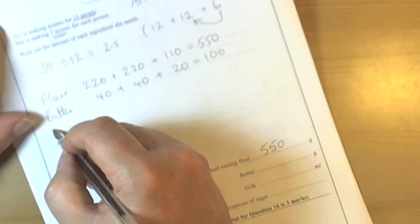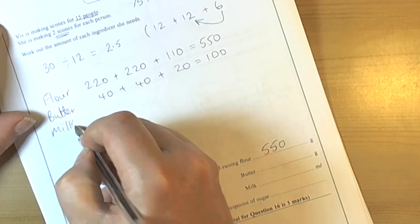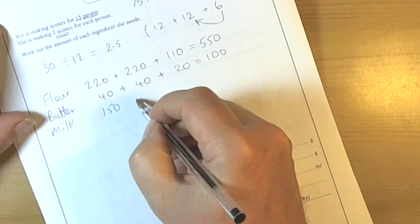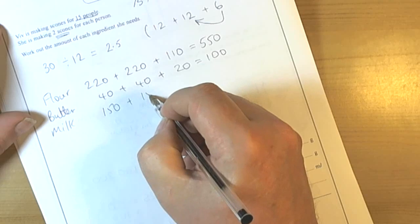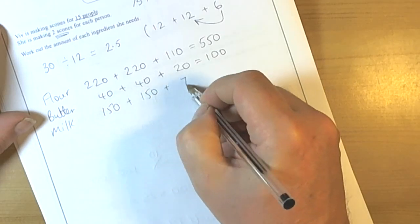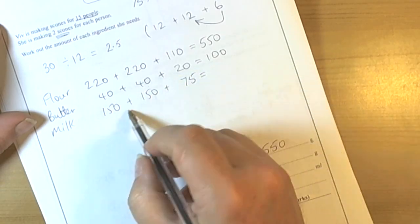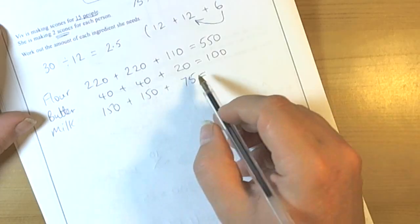And for milk we needed 150 for one recipe of 12, another 150 and then half again. 150, 75, 150, 300, 375.